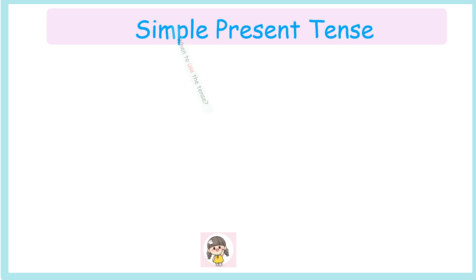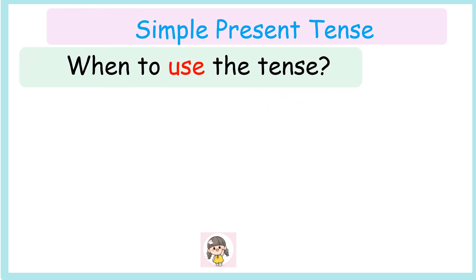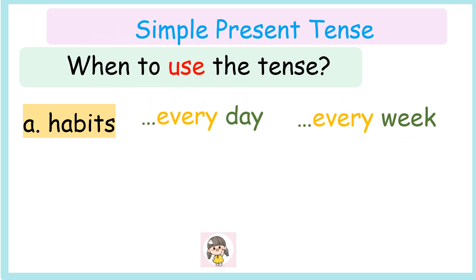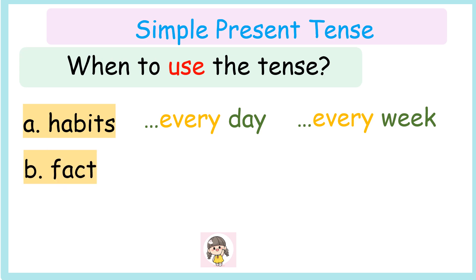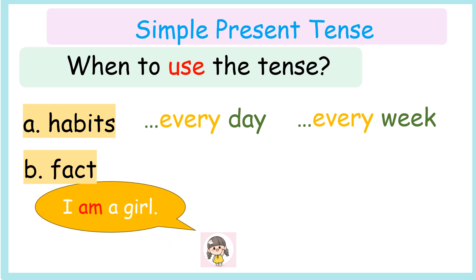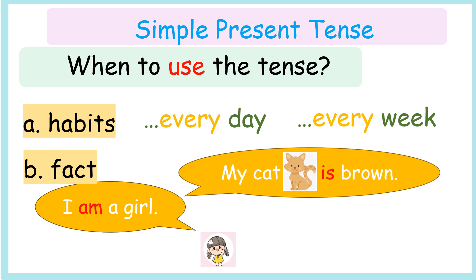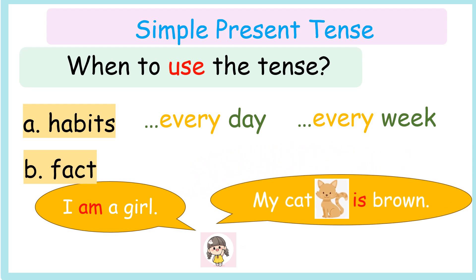This is the way when to use the tense. First, when we talk about habits, we can use simple present tense. Another situation is when we want to talk about fact — that means something true. We can use simple present tense. For example: I am a girl. My cat is brown. It's true.